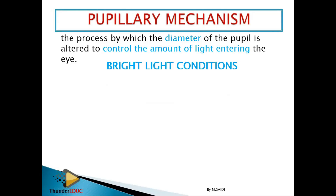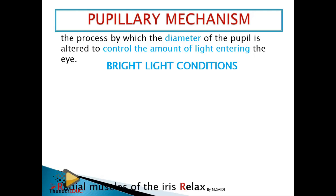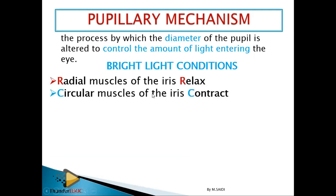During bright light, more light is entering the eye. During dim light, less light is entering. The eye is supposed to adjust so that the same amount of light is entering. During bright light, the radial muscles of the iris relax and then the circular muscles of the iris contract.